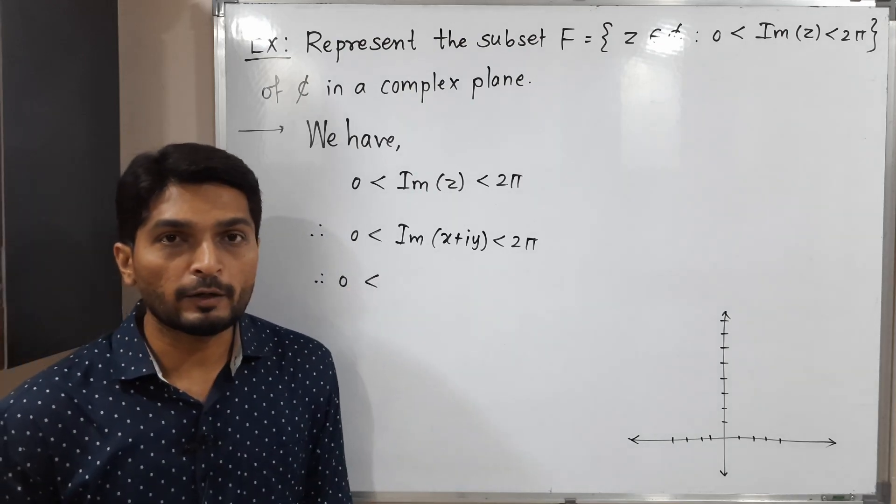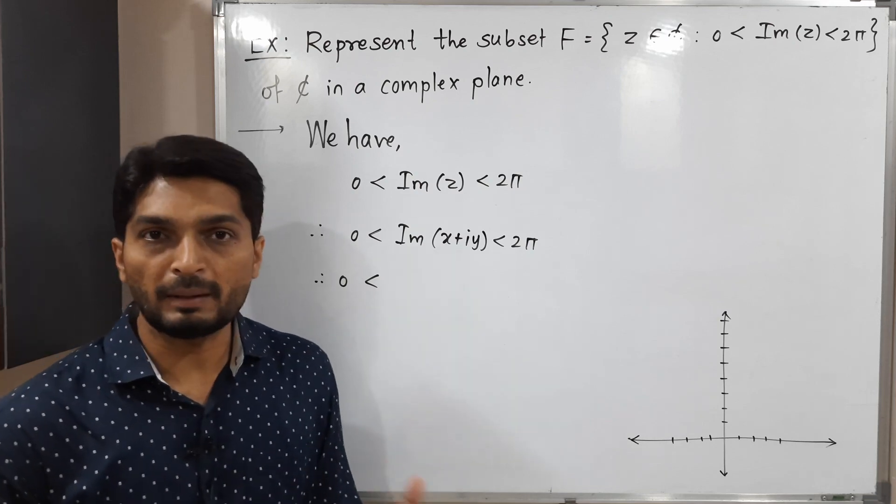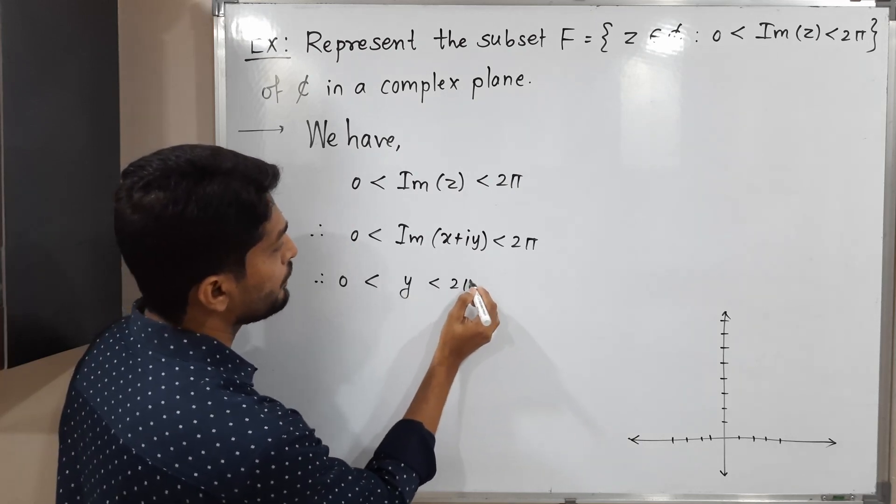What is imaginary part of x plus iy? Obviously y. Its real part is x, imaginary part is y. So we need to write 0 less than y less than 2π.